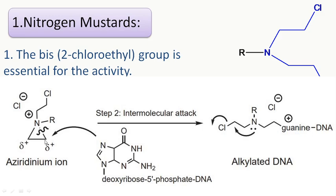It is not a true carbocation but has a considerable positive charge, because the nitrogen of the aziridinium ring is electron-deficient, attracting the electron pair towards itself. Since this carbon is in scarcity of electrons, the N7 of guanine can easily attack here, and the DNA becomes alkylated — an alkyl group such as methyl or ethyl is attached to this portion of DNA.